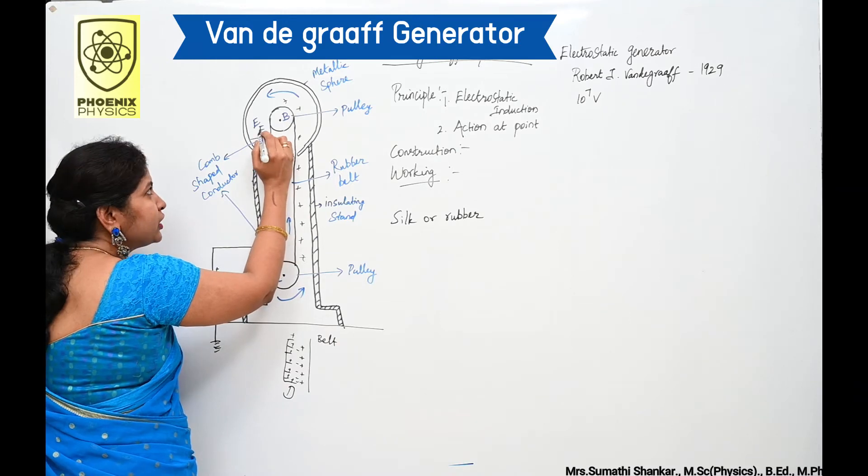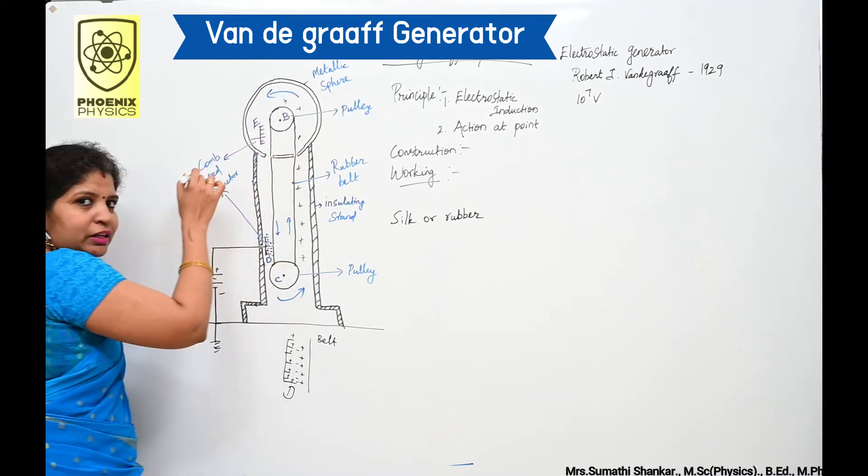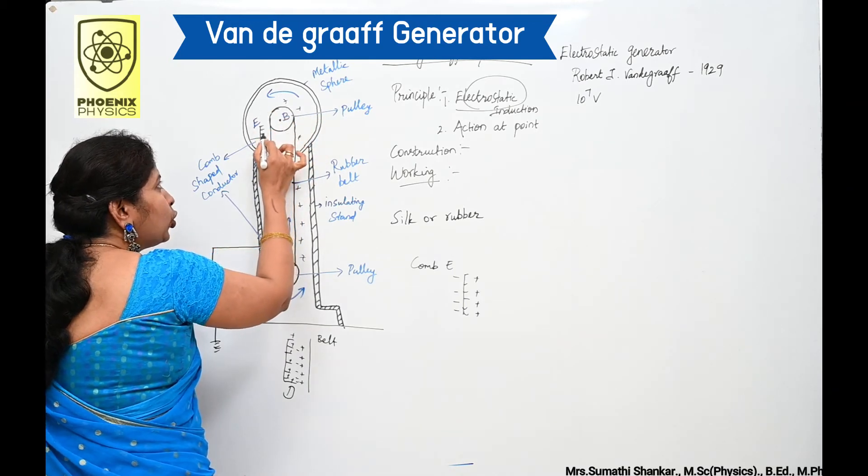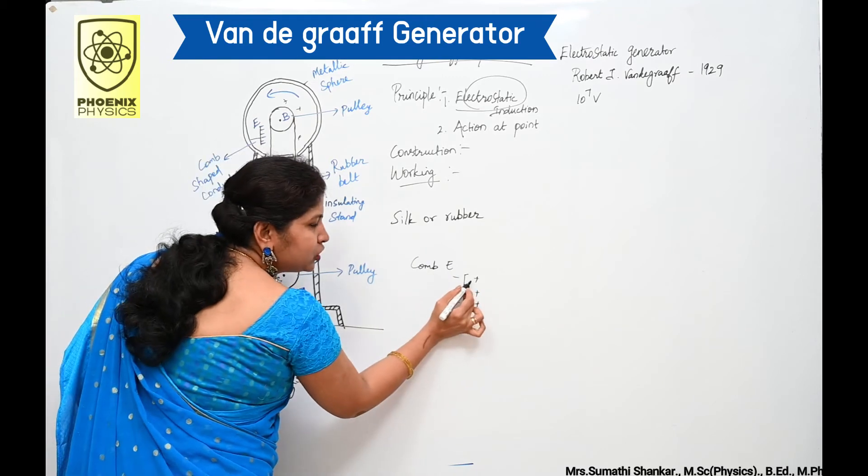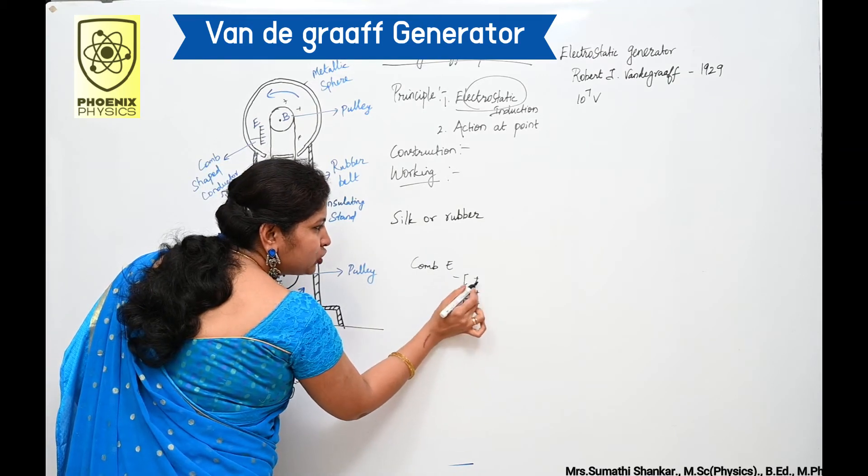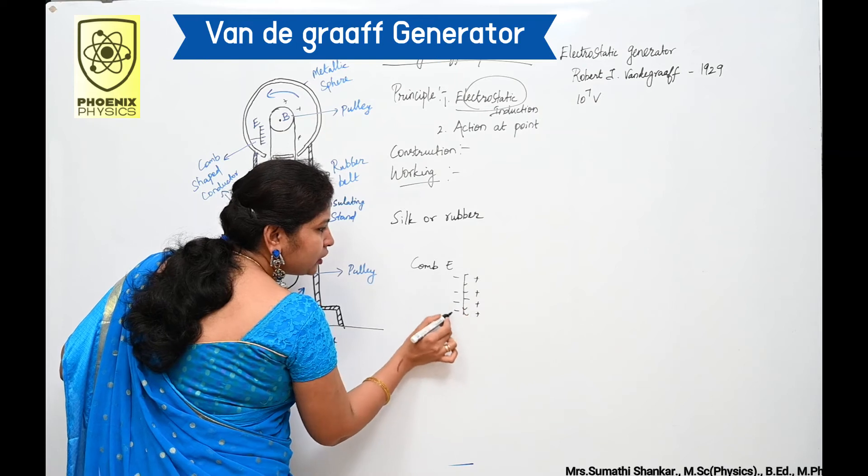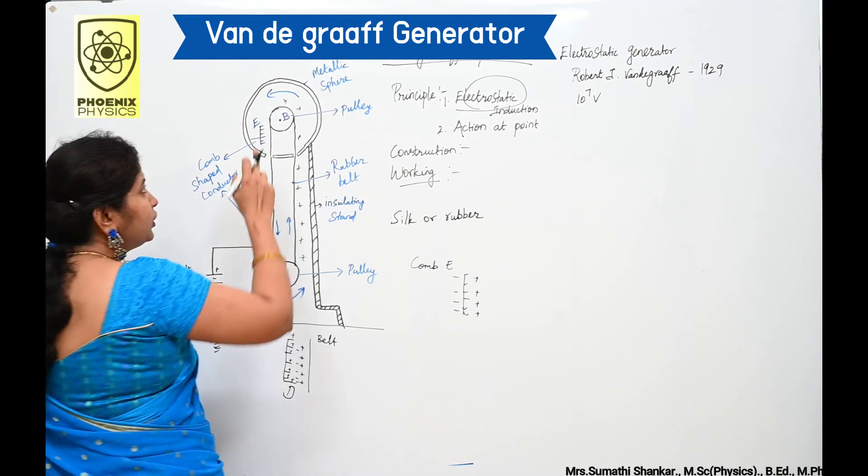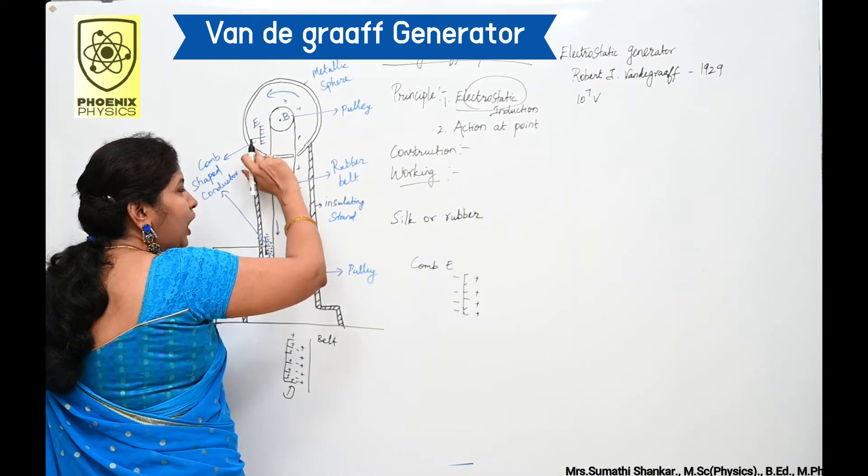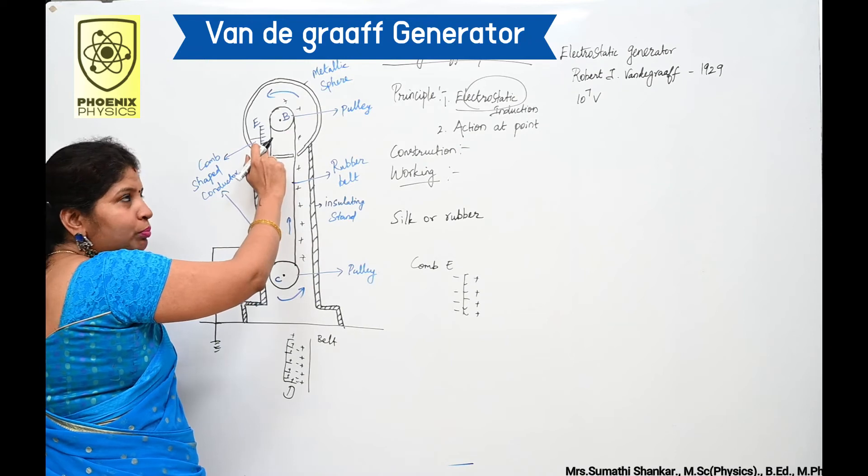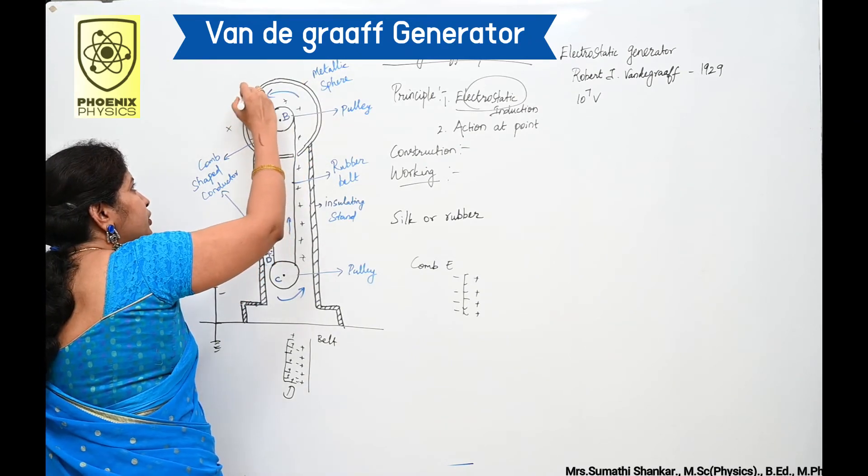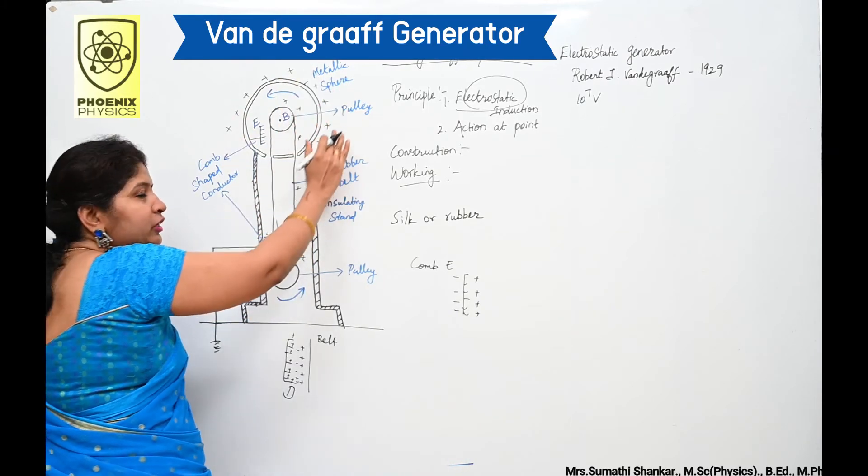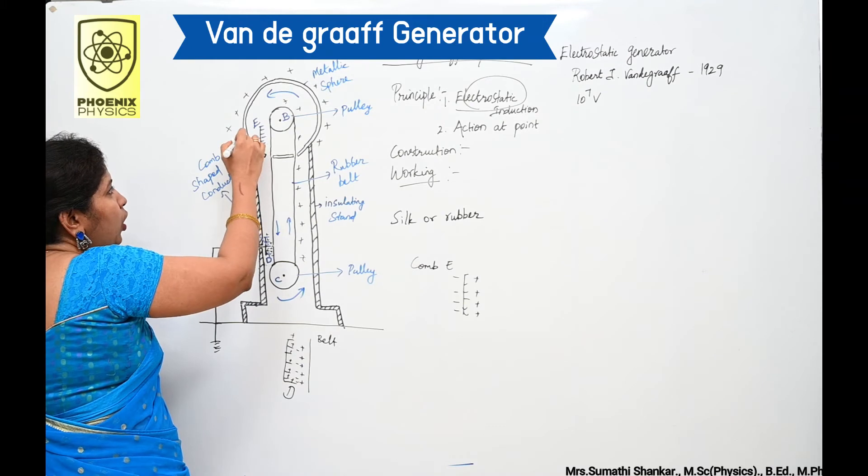Comb E is fixed inside the metallic conductor. When the positive charges reach near comb E, a large number of positive and negative charges are created on either side of comb E due to electrostatic induction. As a result, positive charges are pushed away from the comb and reach the outer surface of the sphere. These charges are uniformly distributed on the outer surface.